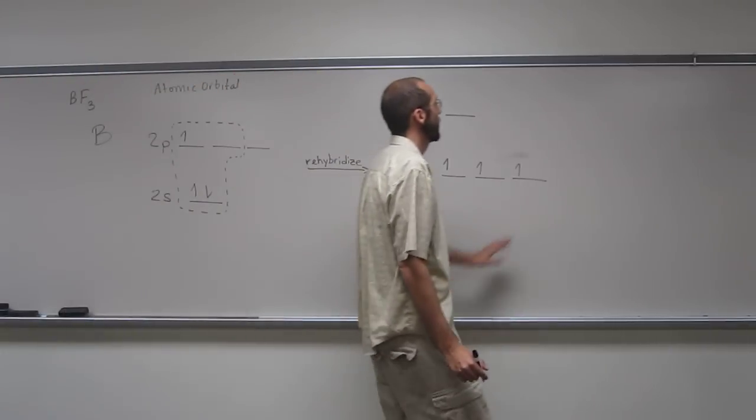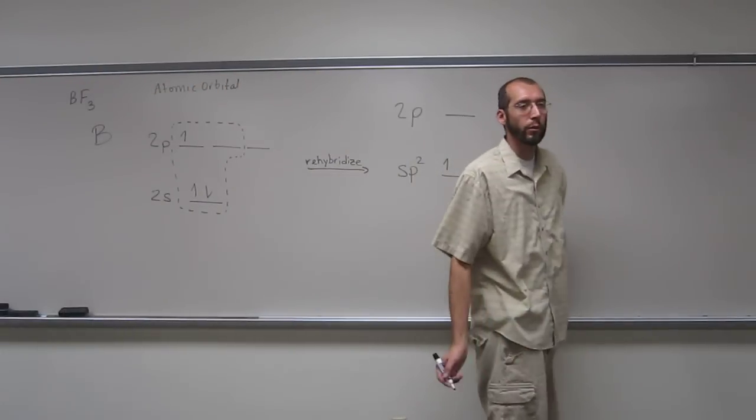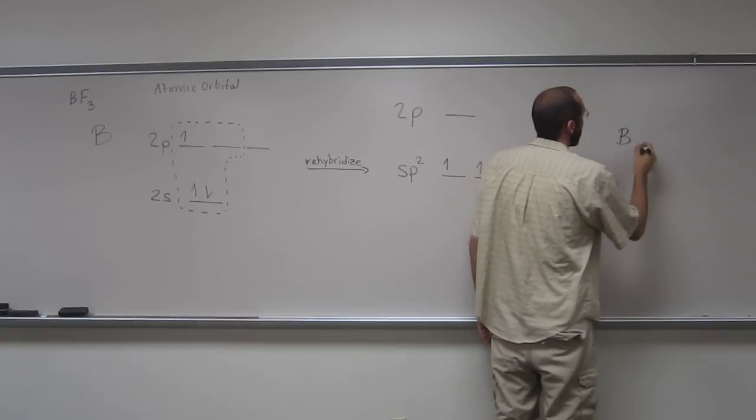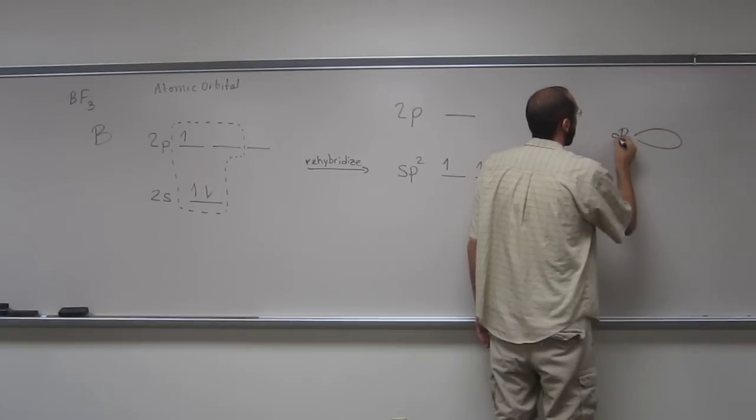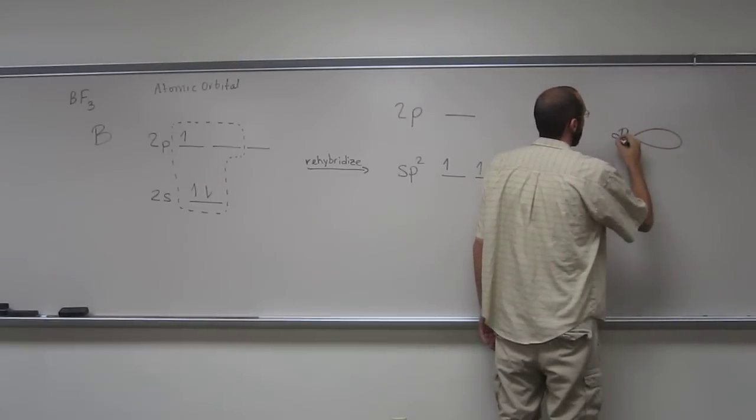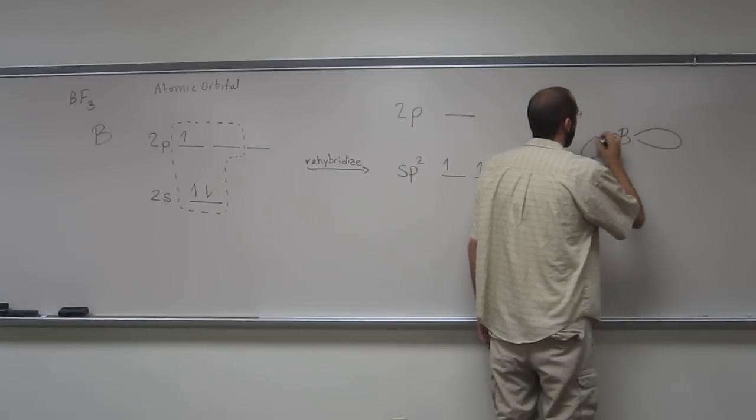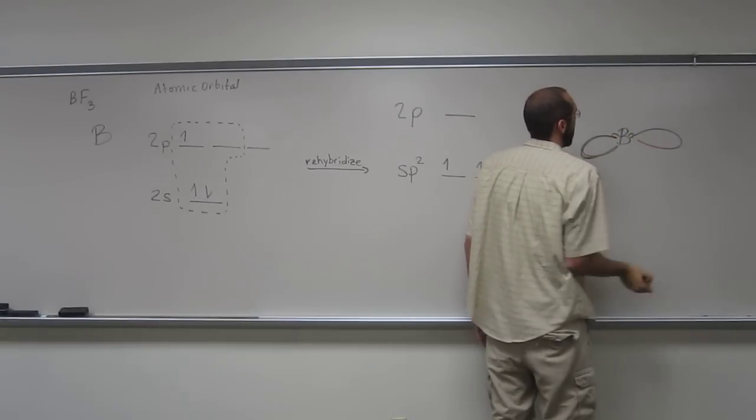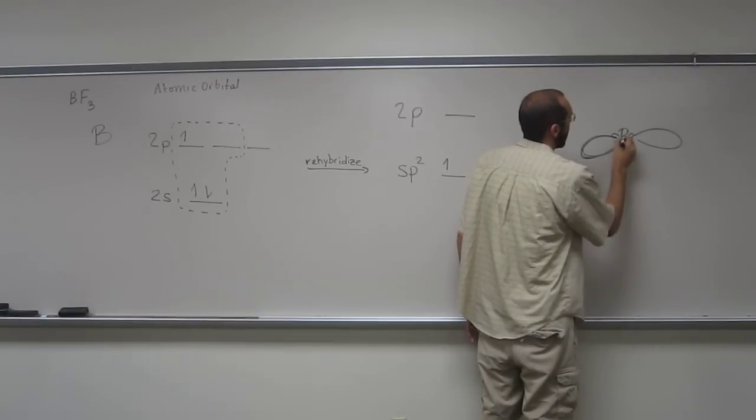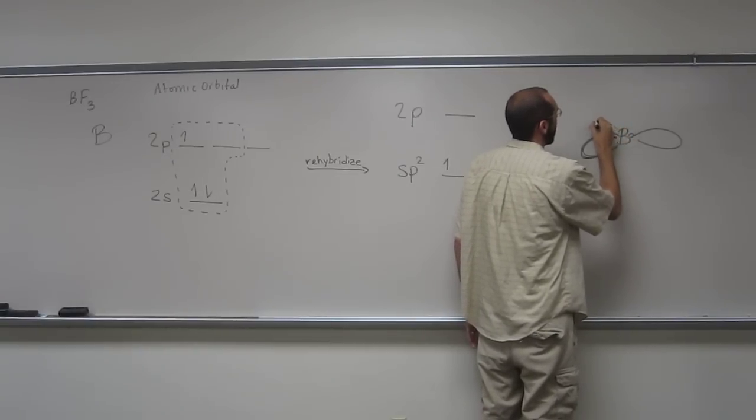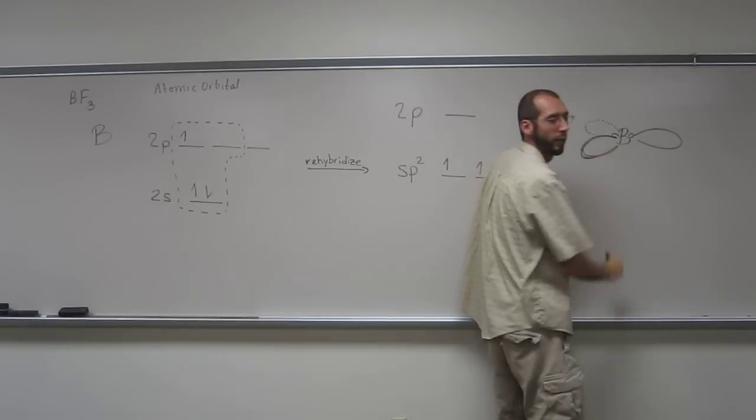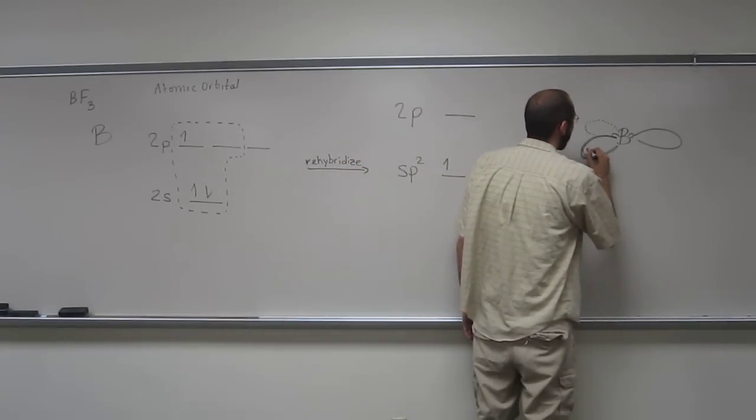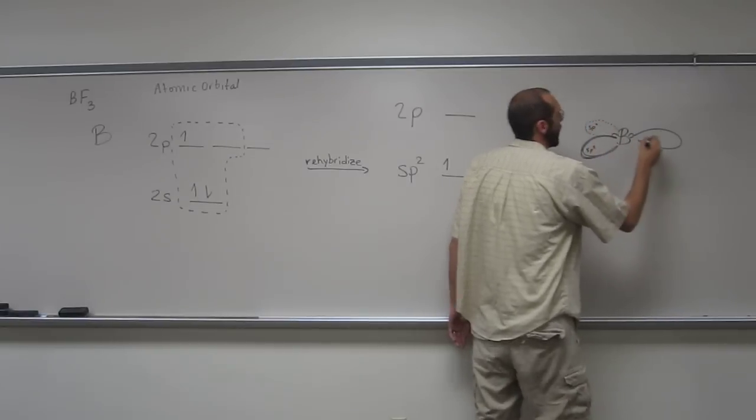So if we wanted to draw what it looks like with its orbitals. So we've got one, this is an sp2 orbital. And then we've got one sp2, if you can imagine, coming out like that. And then the other one, and again, this is kind of hard to see sometimes. Can you guys tell? Like that? Okay, so sp2, sp2, sp2.